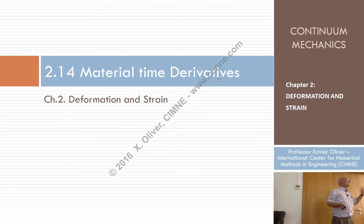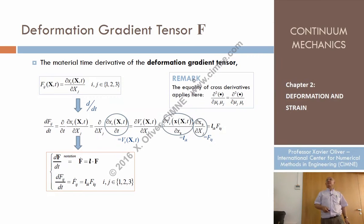We'll discuss material time derivatives of some entities we have defined. For instance, F, the deformation gradient tensor, the fundamental entity for measuring deformation. It depends on time, right? So it makes sense to differentiate this tensor with respect to time.